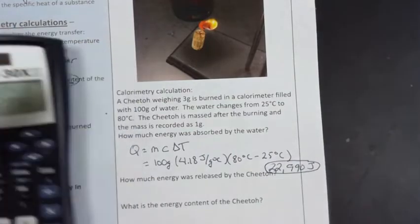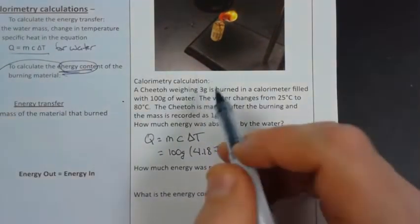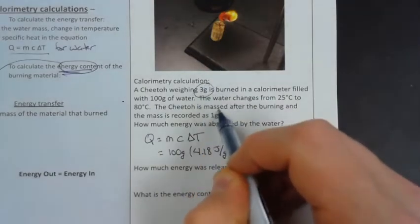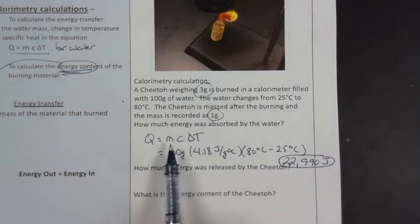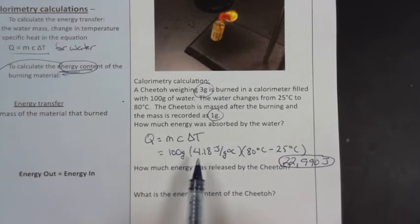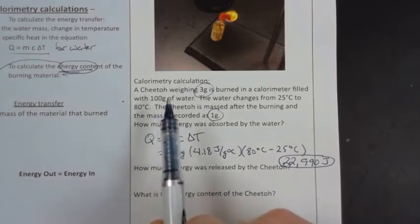Now there's something pretty simple I want to point out, and it's a common mistake. We've got other masses in our question here, and oftentimes those get mistaken for the mass of the water in this equation. In order for us to be able to use this 4.18, which is the specific heat for water, we have to use the mass of water.